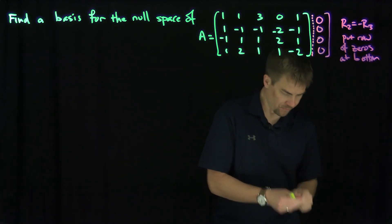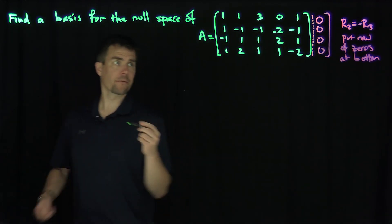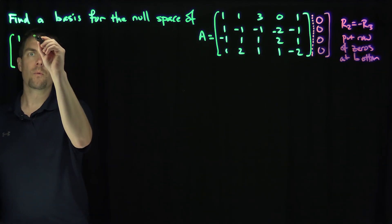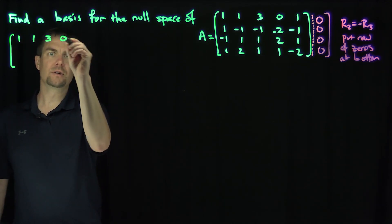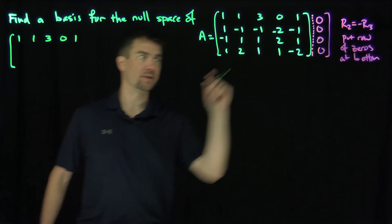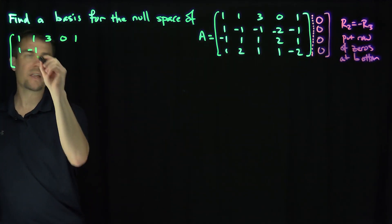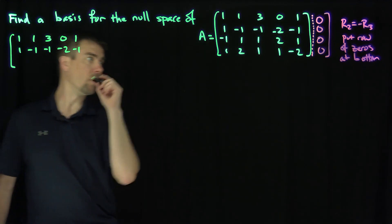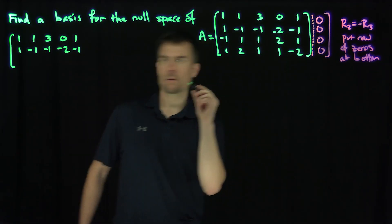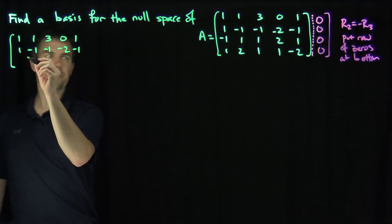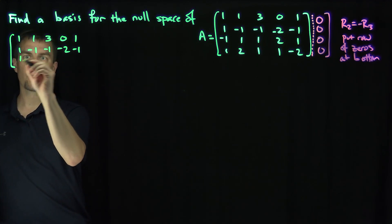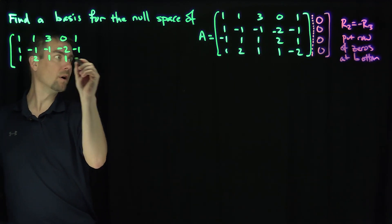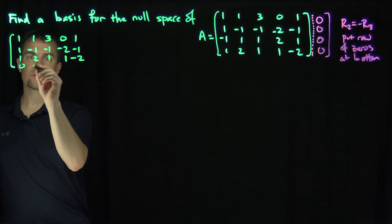So that's our first step. What will that change A into? The first row stays the same: 1, 1, 3, 0, 1. Then we keep row two: 1, negative 1, negative 1, negative 2, negative 1. Row two plus row three becomes zero, so I'll move row four up to row three: 1, 2, 1, 2, 1, 1, negative 2, and then zeros below it.